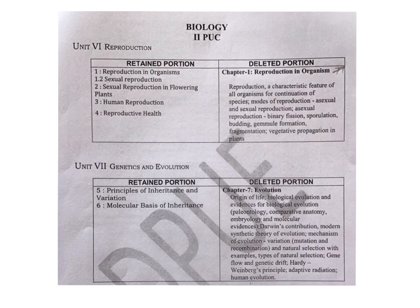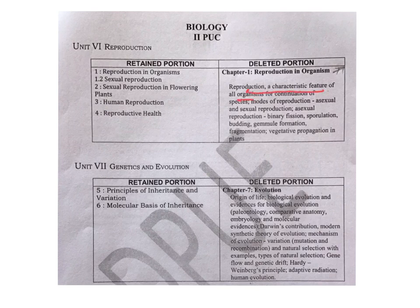In the second year, Unit 6 is the reproduction unit. In the reproduction unit, there are four chapters. In the revised syllabus, out of four chapters, one chapter has half of its portion removed. The portion which is deleted is from 'Reproduction in Organisms.' In that, some parts are deleted — for example, reproduction as a characteristic feature of all organisms for continuation of species. This part is removed.